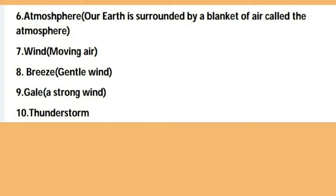The next hard word is 'thunderstorm', spelled T-H-U-N-D-E-R-S-T-O-R-M. A thunderstorm is a storm that includes thunder and lightning. Thunder is a rumbling sound, and lightning is the flash of electricity. When strong wind comes with thunder and lightning, we call it a thunderstorm.